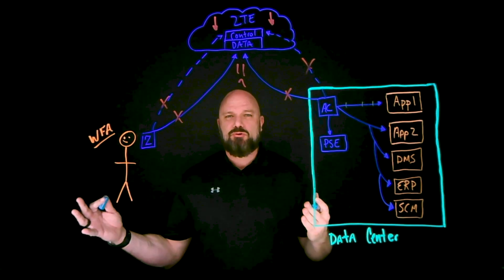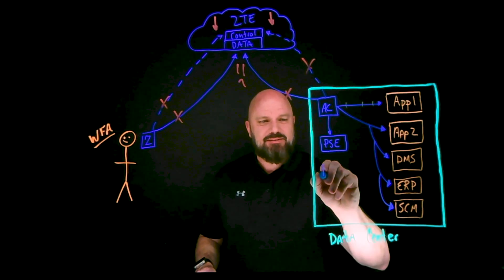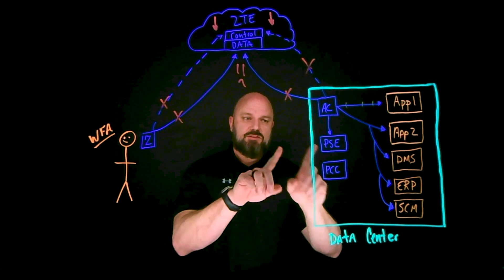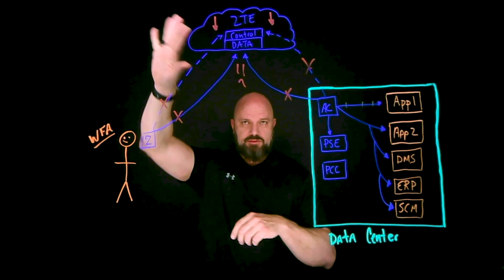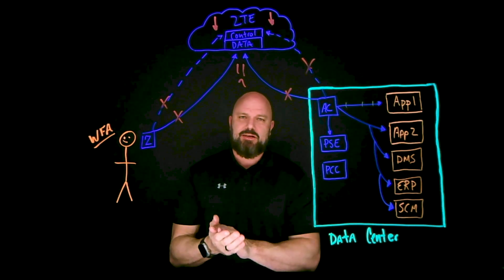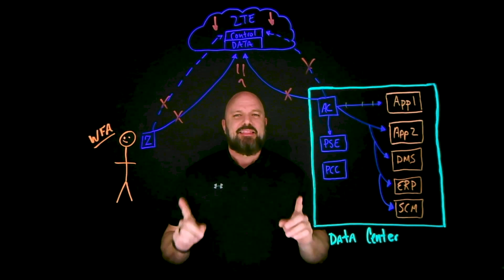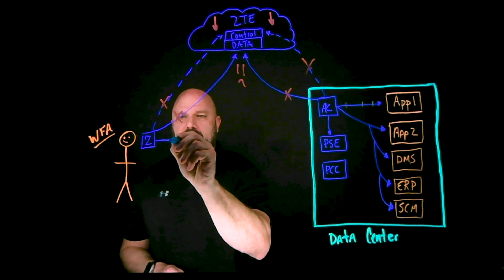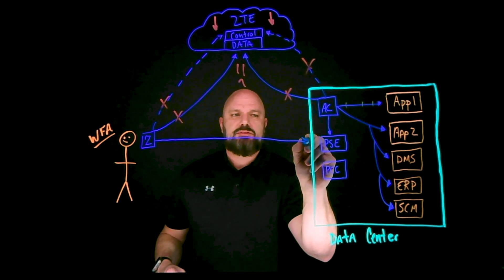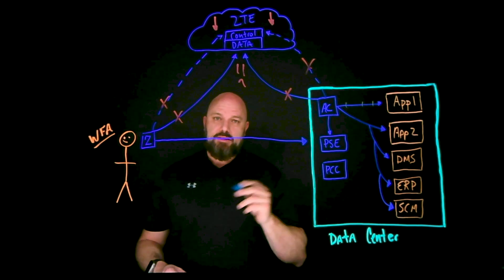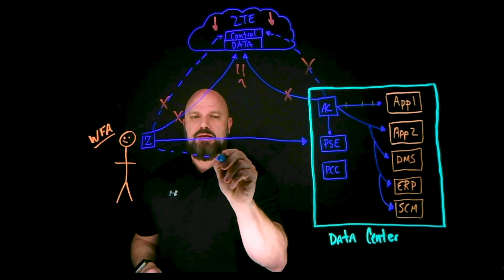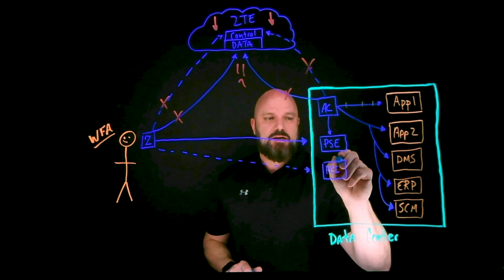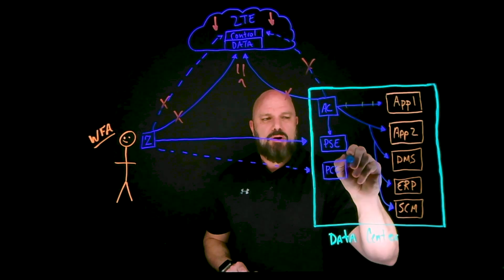This is where the PCC — the Private Cloud Controller — that lives on-prem comes in. When deployed, it constantly talks to the Zero Trust Exchange, keeping all the most current policy updates, app segments, and configurations synced. So if there's a catastrophic failure, the user is told to send data plane traffic to the Private Service Edge, and the control plane now talks to the Private Cloud Controller. The PCC is the brain of the operation.